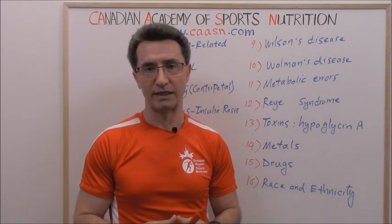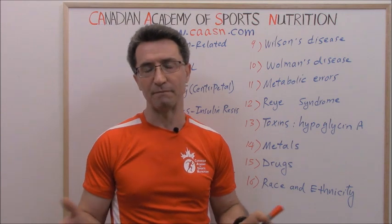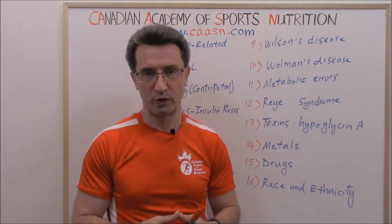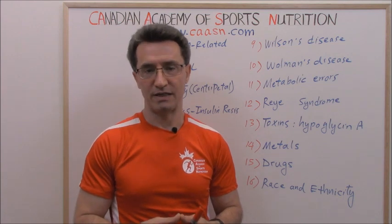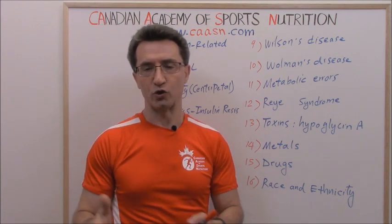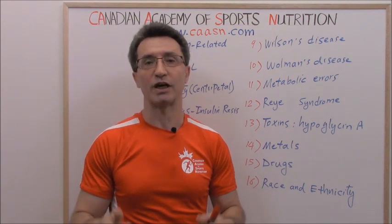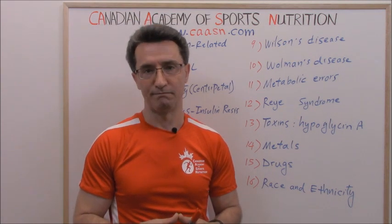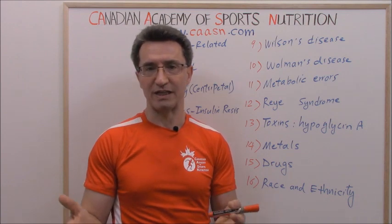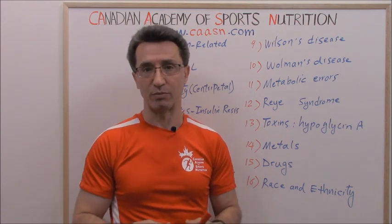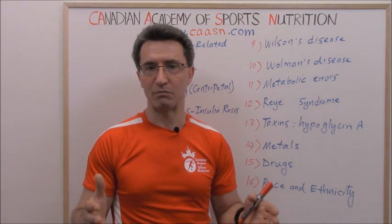Number eleven: metabolic errors. There are quite a few, but here are four common ones that could lead to fatty liver: glycogen storage diseases, tyrosinemia (a metabolic disorder where the amino acid tyrosine in the blood goes up), galactosemia (where the sugar galactose in the blood goes up), and homocystinuria (a metabolic disorder in which the amino acid homocysteine appears in the urine).